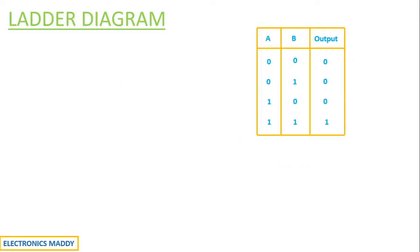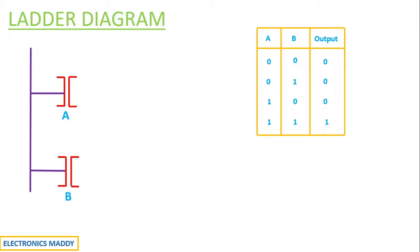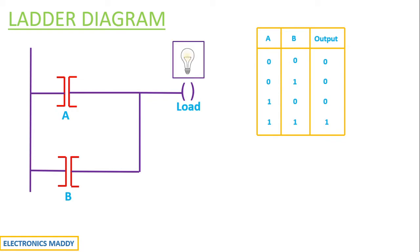The ladder diagram can be analyzed just like the way we did it for the switches. Let us consider two contacts connected in parallel to the load in this particular fashion. We are using a lighting load again. These type of contacts are actually called normally open contacts.